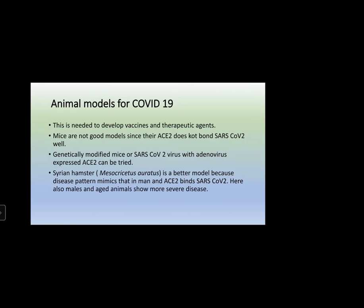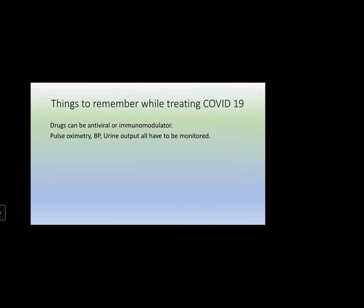There are also animal models for COVID-19 used in developing drugs and vaccines. Mice are not a good model because their ACE2 receptor does not bind human SARS coronavirus well. Genetically modified mice expressing human ACE2 can be used, or they can be exposed to SARS coronavirus coupled with an adenovirus expressing ACE2. The Syrian hamster (Mesocricetus auratus) is a better model because its ACE2 receptor binds SARS coronavirus, and the disease pattern is similar to humans — older males suffer more.